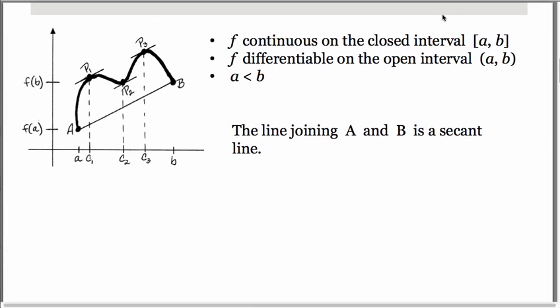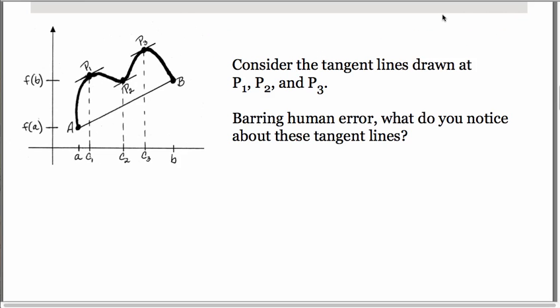You'll notice the line that joins points a and b is a secant line and you will notice that there are little tangent lines drawn at p sub 1, p sub 2, and p sub 3.